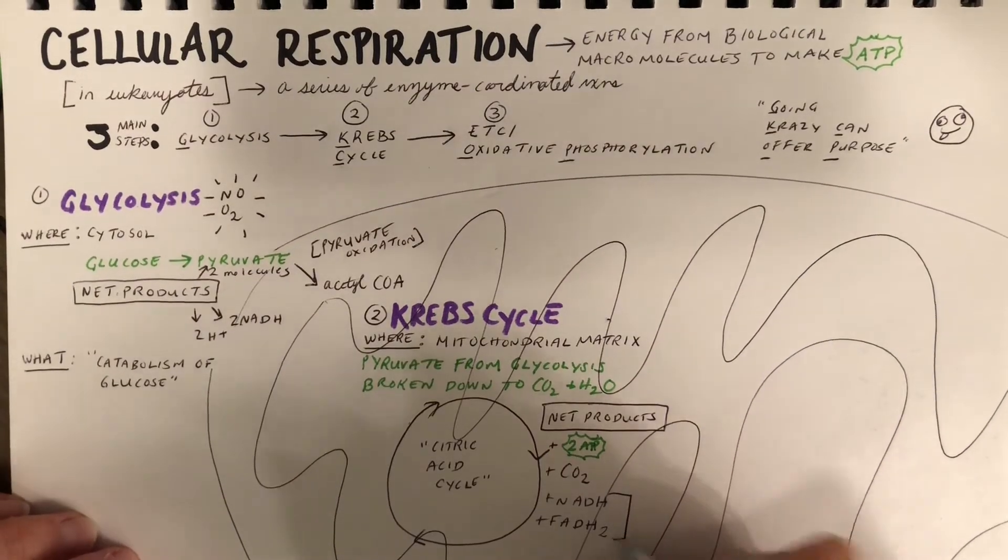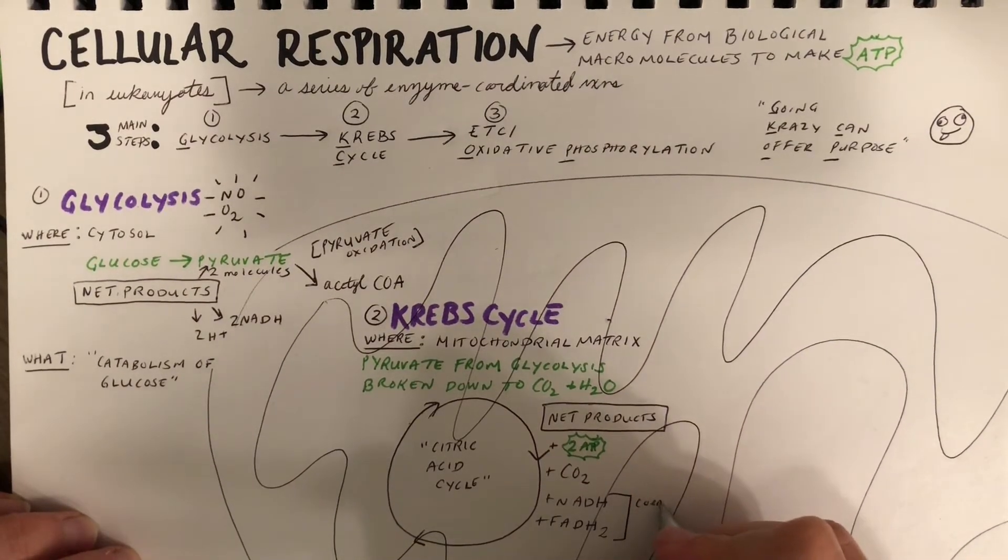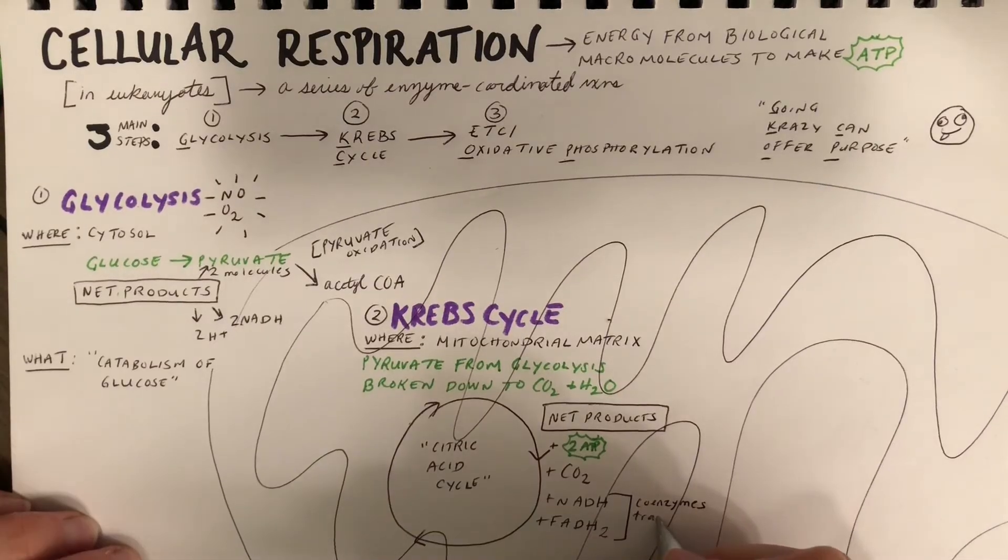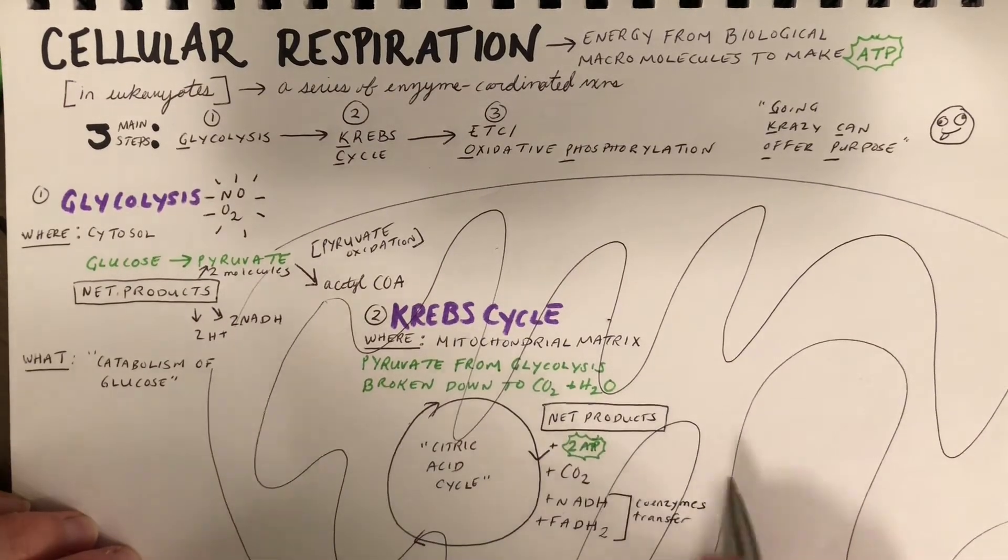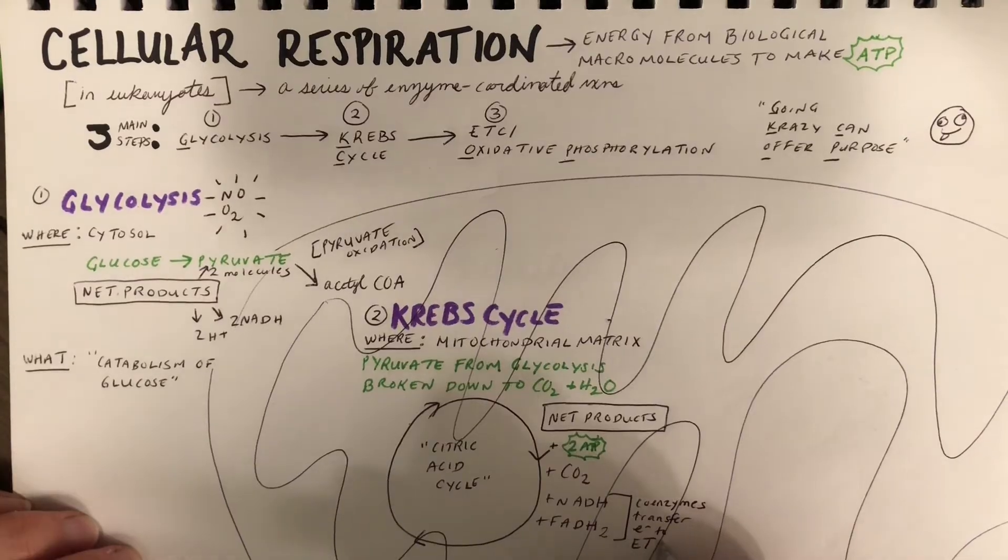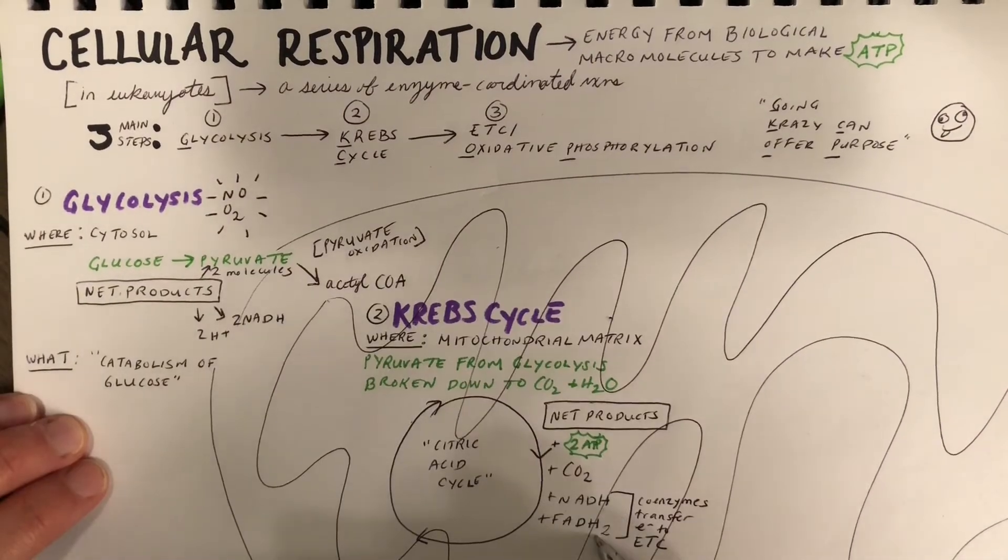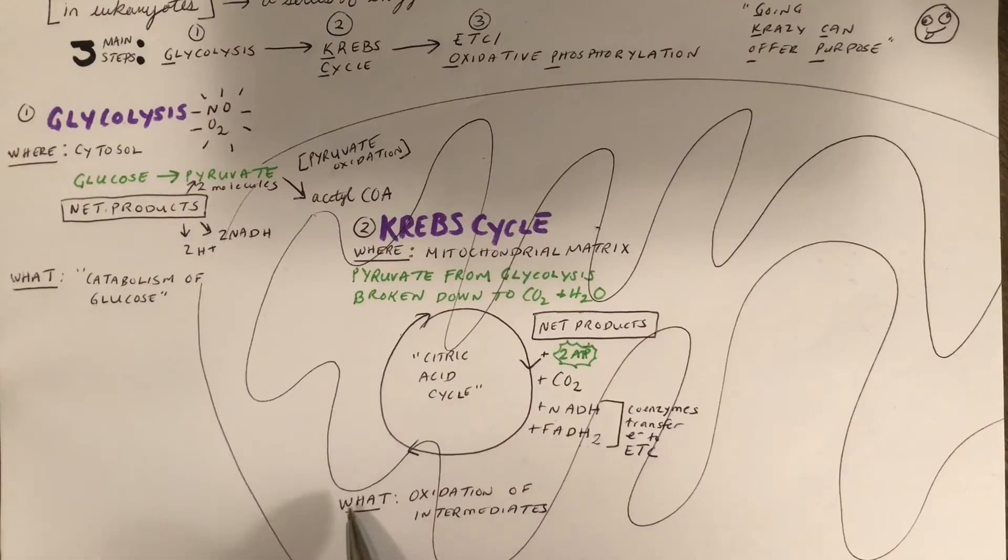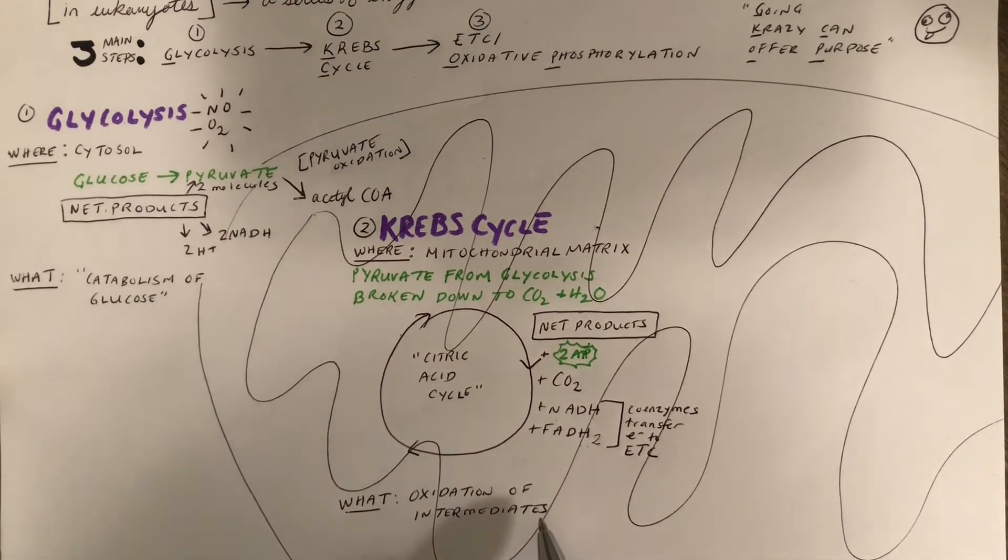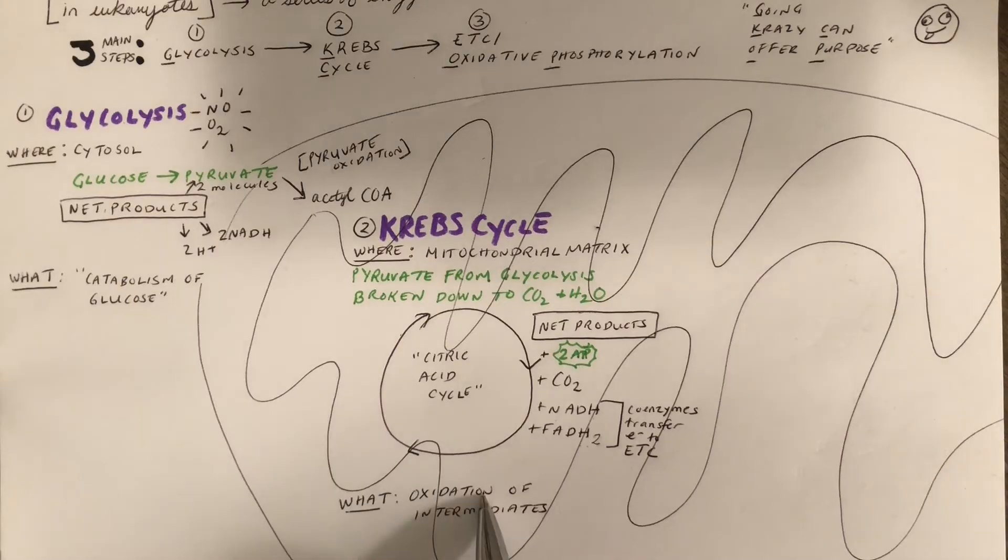These two are what we call coenzymes. Their job here is to transfer electrons to the electron transport chain. These will later bind to an enzyme to get the reaction started. Another way to summarize the Krebs cycle is that it's the oxidation of intermediates, meaning we have the loss of electrons that will later be transferred to the electron transport chain. Molecules that lose electrons are oxidized.